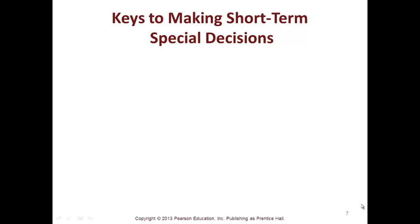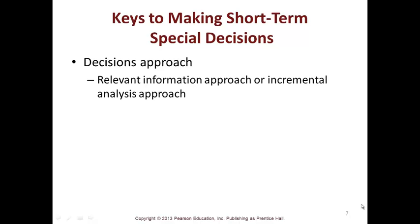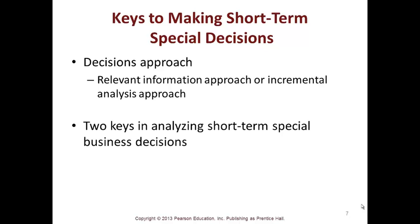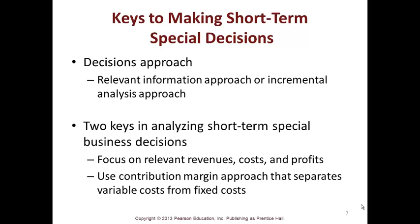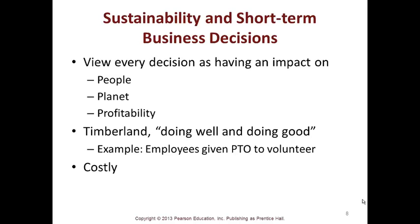Keys to making short-term special decisions include the relevant information approach or the incremental analysis approach. Two keys are: focus on relevant revenues, costs, and profits, and use the contribution margin approach that separates variable costs from fixed costs. Sustainability and short-term business decisions view every decision as having an impact on the people, the planet, and profitability.